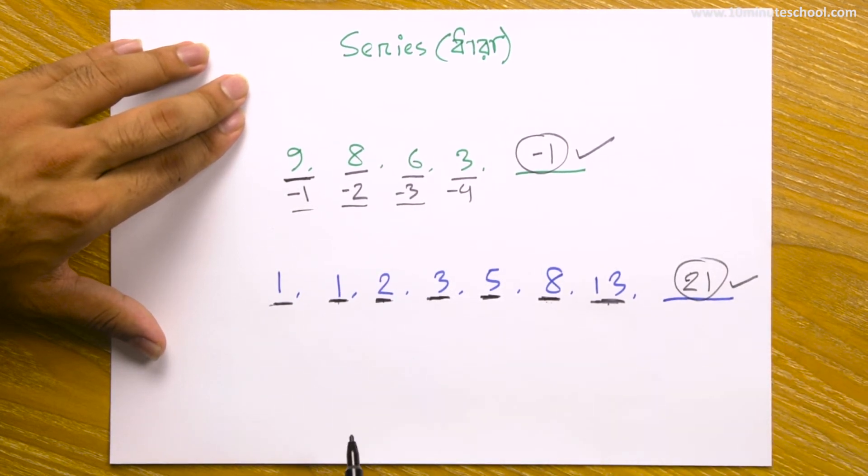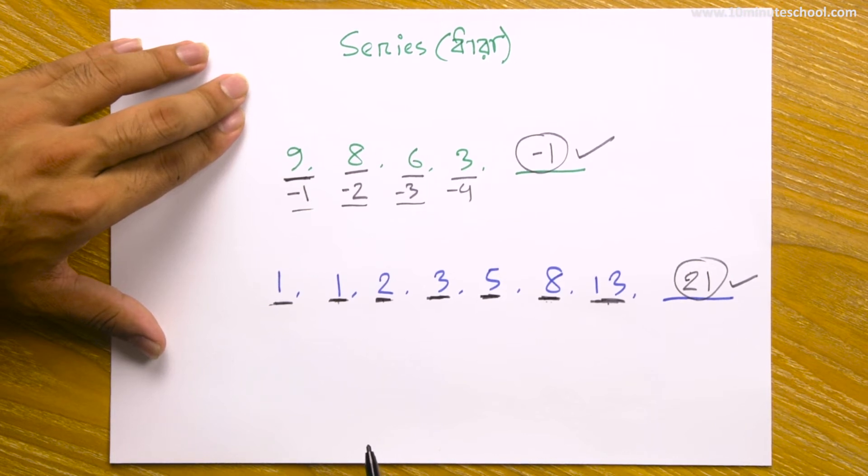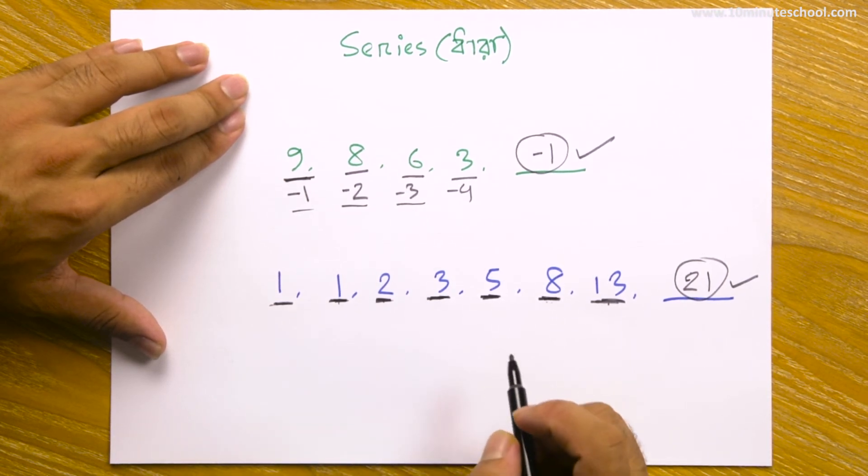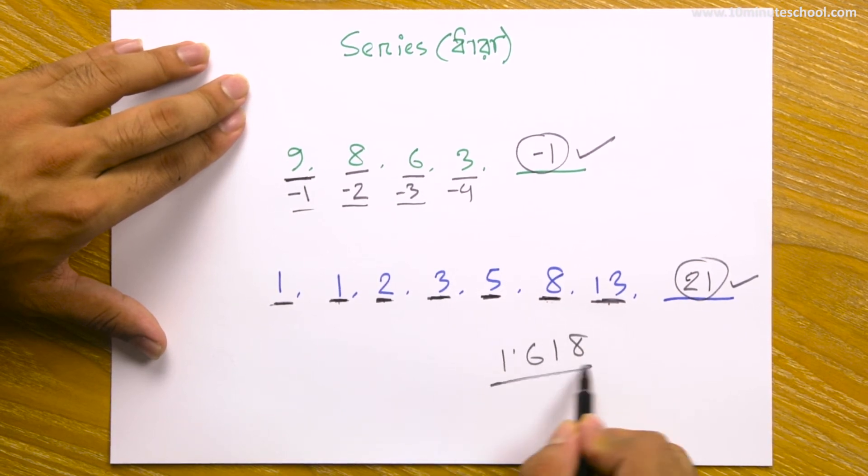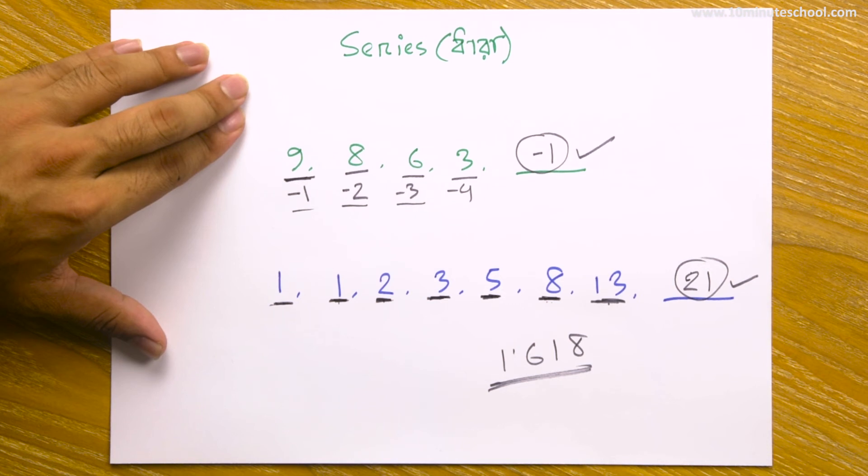This series is Fibonacci's series. This series maintains a ratio of each other. This ratio is phi, or 1.618. You can search on YouTube to see more details. This is the magic ratio.